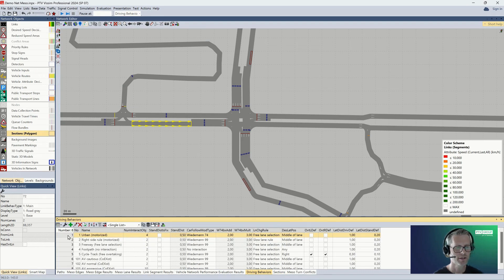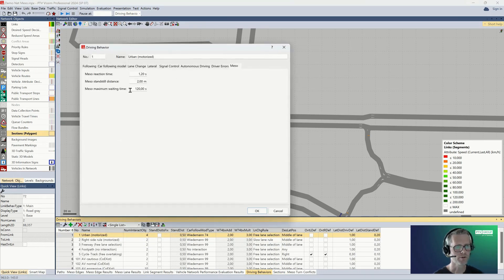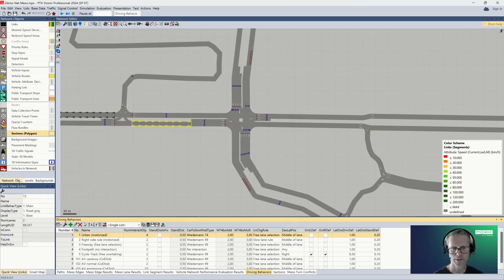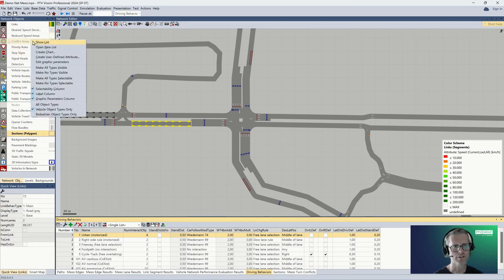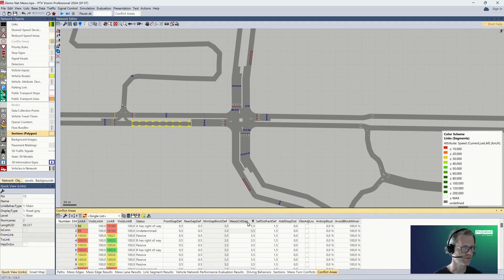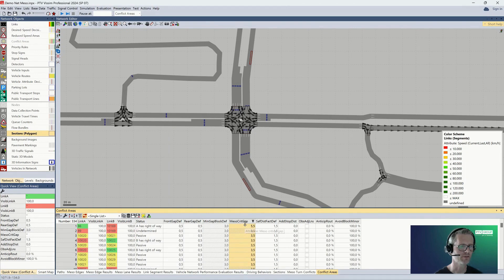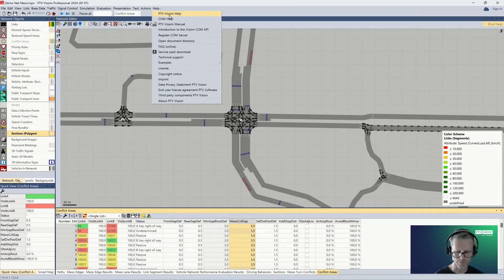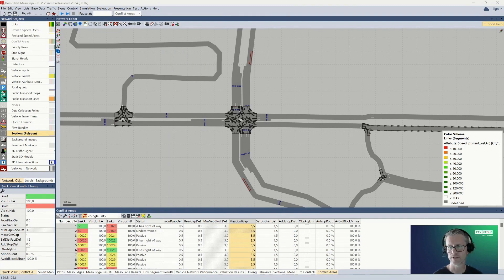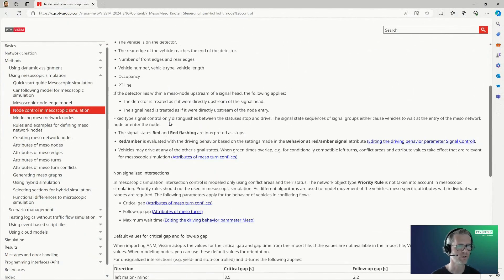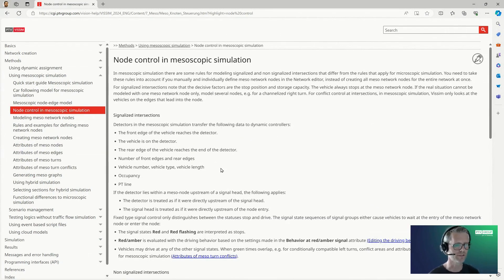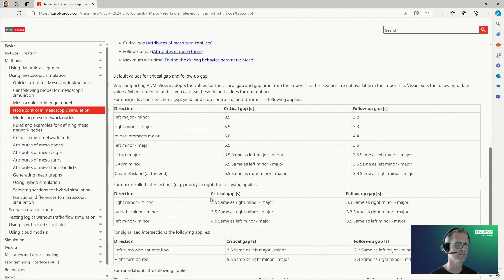If you go through base data to driving behaviors parameters and go to the meso tab, you can find the meso maximum waiting time here defined. If you open the list of conflict areas, then here you can also find the parameter which is called meso critical gap for all corresponding conflict areas in your model. There's one more thing I would like to mention. If you go through help and PTV VISSIM help, it opens the online hub of VISSIM. When you look for node control and mesoscopic simulation, you will find the full explanation, but you will also find here the table with default or recommended values for critical gap and follow-up gaps for different types of directions.